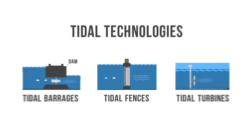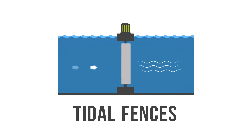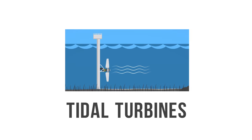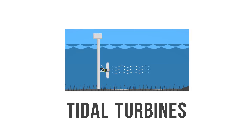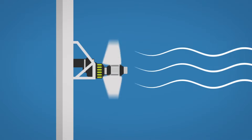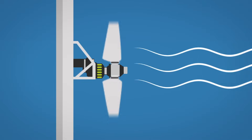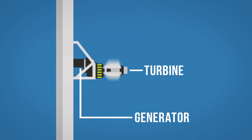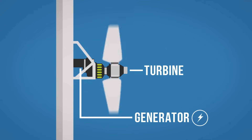Tidal fences are turbines that operate like giant turnstiles, whereas tidal turbines are similar to wind turbines, only underwater. In both cases, electricity is generated when the mechanical energy of tidal currents turns turbines connected to a generator. The generator produces electricity.